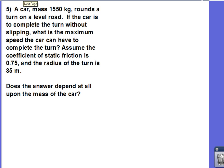Now, I'd like to go through an example with you, show you how we might incorporate our static friction model, and perhaps our kinetic friction model, with circular motion dynamics. Here we have a car, 1550 kilograms, rounds a turn on a level road. If the car is going to complete the turn without slipping, I'd like to determine the maximum speed the car can have to complete that turn. We're going to assume the coefficient of static friction is about 0.75, and the radius of the turn is about 85 meters.